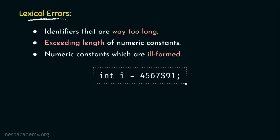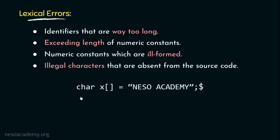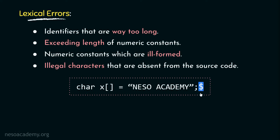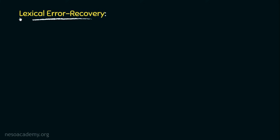Consider a statement with a dollar sign in between a numeric constant — that makes it an ill-formed numeric constant and therefore a lexical error. Additionally, if a program includes illegal characters that are absent from the source language, that too is considered a lexical error. For example, a C language statement ending with a dollar symbol is a lexical error because C does not use the dollar sign. These are the different types of lexical errors.